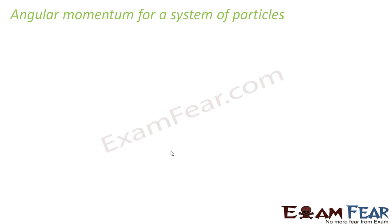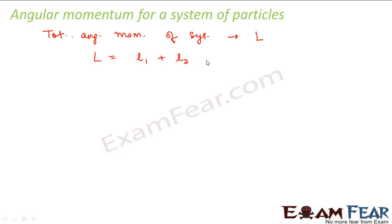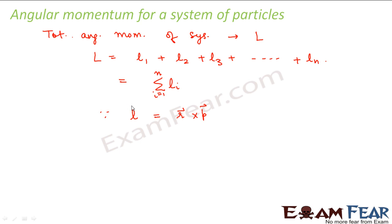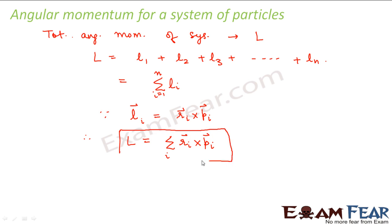So let us look at the angular momentum for a system of particles. We denote the total angular momentum of the system by capital L. The total angular momentum will be the sum of the angular momentum of each of the particles: L1 plus L2 plus L3 up to Ln, which can be written as summation of Li where i varies from 1 to n. Now we know that L is equal to R cross P — this is how angular momentum is defined. So Li equals Ri cross Pi, and therefore the total angular momentum is summation of Ri cross Pi.